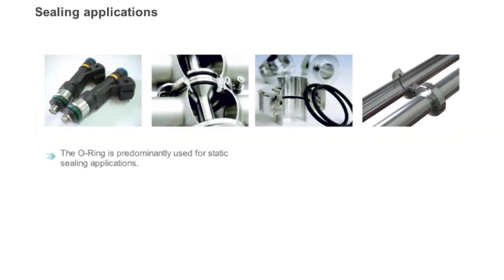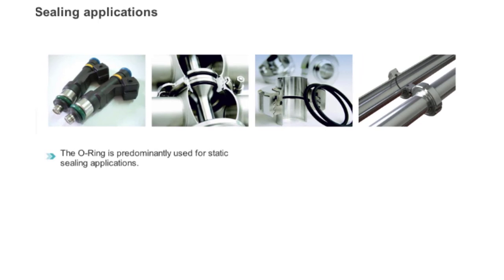The O-ring is predominantly used in static sealing applications. Generally, the direction of the sealing force defines the O-ring's mode of application, either axial or radial. In this chapter, you are going to learn about the different types of sealing applications O-rings can be used for.